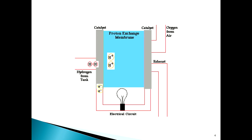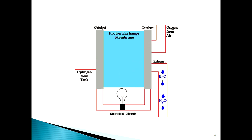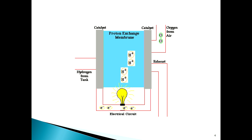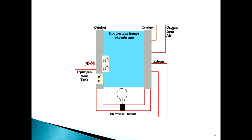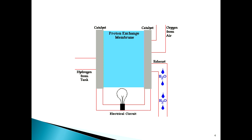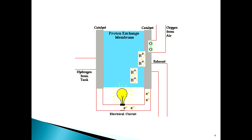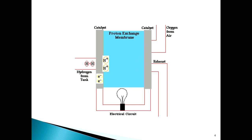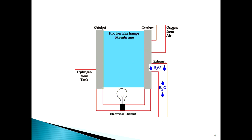Here you can see the performance of the fuel cell system in more detail. The positive protons go through the catalyst and the proton exchange membrane — we denote it by PEM. Then the electrons come from an electrical circuit and produce electricity. The ions then combine with oxygen and produce water.